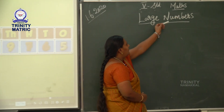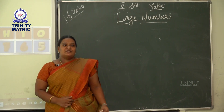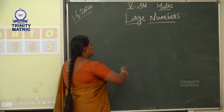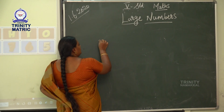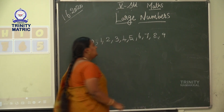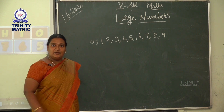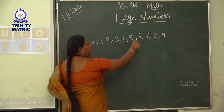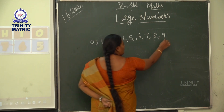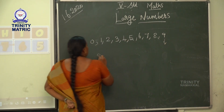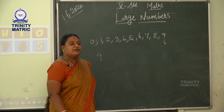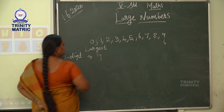So what are large numbers? Large numbers means what is large — large means big, so big numbers. Tell me: which is the largest one-digit number? From 0 to 9, which is the largest one-digit number? The largest one-digit number is 9.